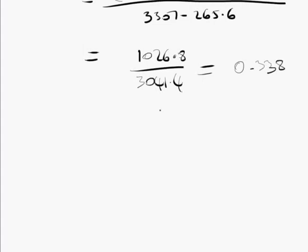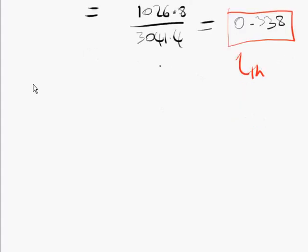And that is our answer. E to th, thermal efficiency of the plant. Part C is to find the quality of the steam at the turbine exit. We haven't done that. We know what x4s is, but we're now being asked for x4.